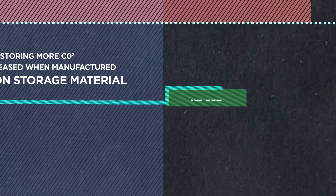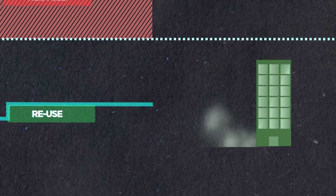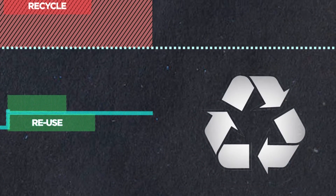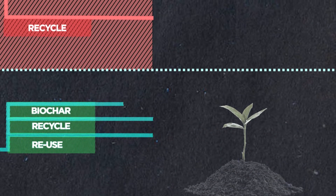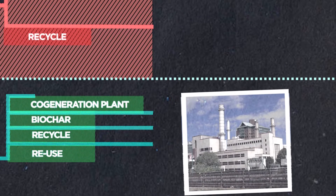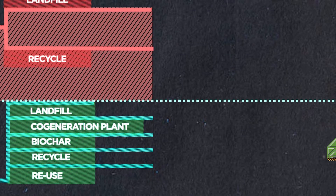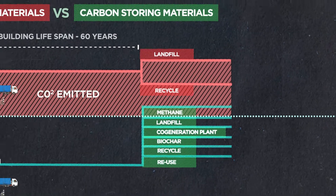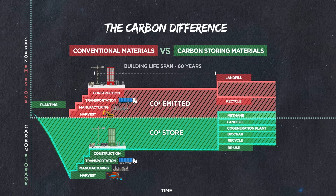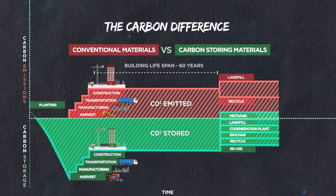Then at the end of its life, depending on the material, it can go a bunch of different ways. Sometimes we can reuse it in another building and the carbon storage continues. We could recycle it, burn it to create biochar and store some of the carbon, or burn it at a cogeneration plant to create both heat and power. Maybe it's just buried in landfill, or worst case it breaks down and releases methane into our atmosphere. But regardless of what happens, this is the difference between materials that have a carbon footprint and materials that offer carbon storage.